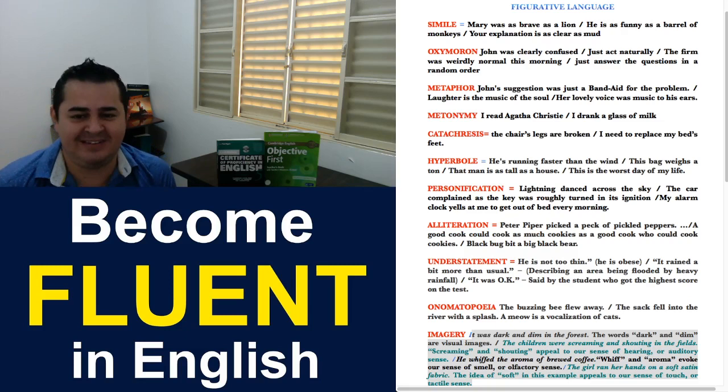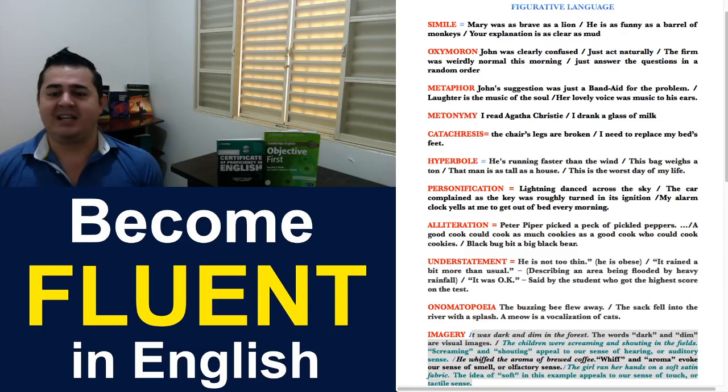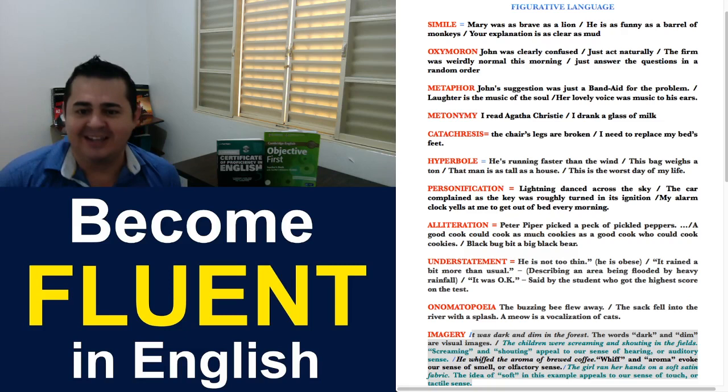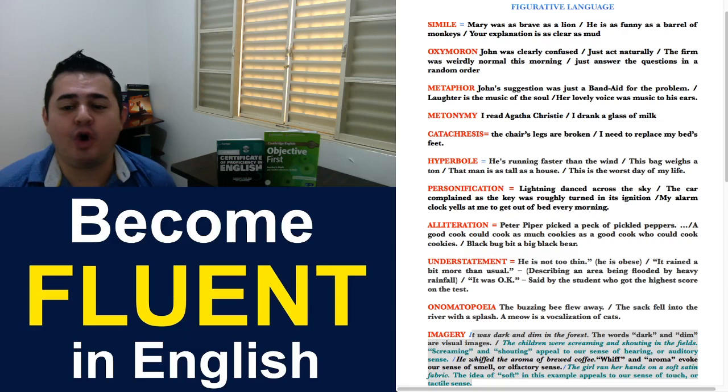Second example: It rained a bit more than usual. When you're describing an area being flooded by heavy rainfall. So, there's a lot of flood, a lot of rain, and you're saying, well, it rained a bit more than usual. You're softening the real situation.